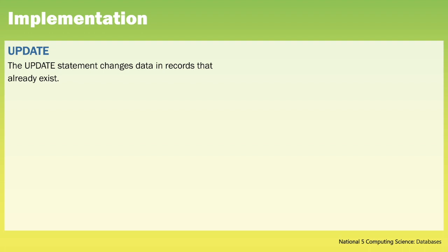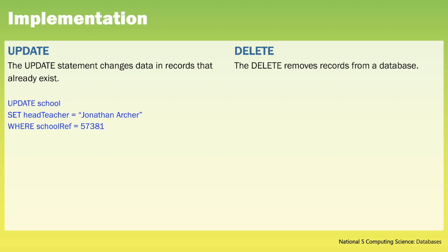An UPDATE statement changes the data in records that already exist. An UPDATE statement includes three parts: UPDATE states the name of the table that we are changing, SET is the new value, and WHERE is the condition of the record that we want to update. In this example we're changing the head teacher of the school with the reference 57381. A DELETE query removes records from a database and has two parts: DELETE states the name of the table we're deleting from and WHERE is the condition of the records we want to delete. If we do not include any conditions then we will delete all records within the database. With UPDATE and DELETE queries it is important that you're sure you're changing and deleting the correct records, as these queries cannot be reversed.